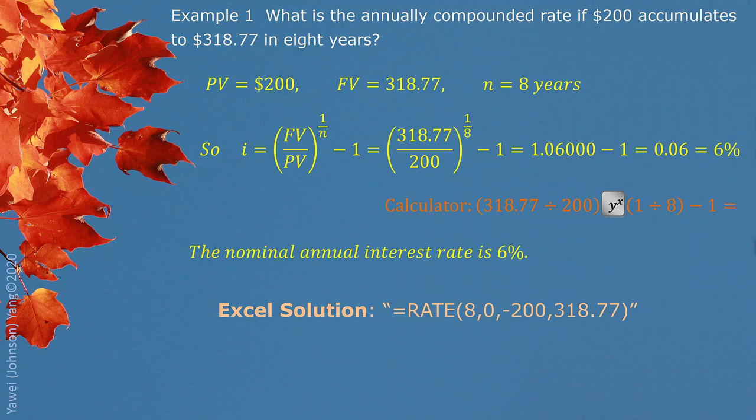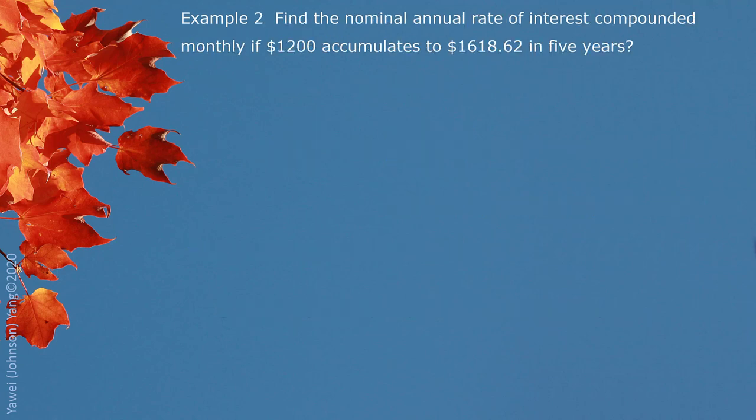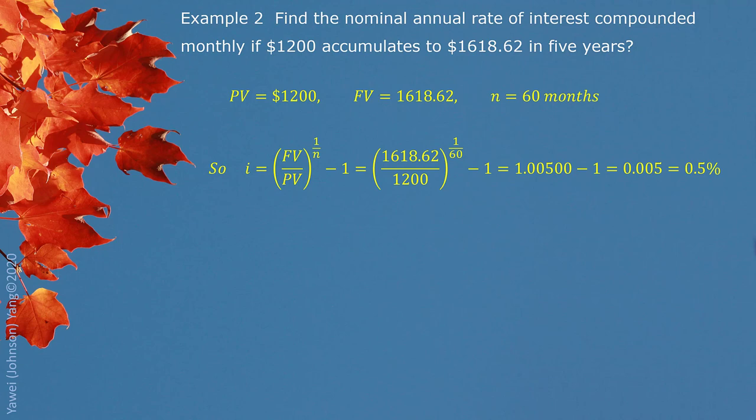Example 2. Find the nominal annual rate of interest compounded monthly if $1,200 accumulates to $1,618.62 in 5 years. So we recognize present value $1,200, future value $1,618.62. Total compounding period counting by month would be 60. Put all the information in the formula, we can get 0.5% directly.